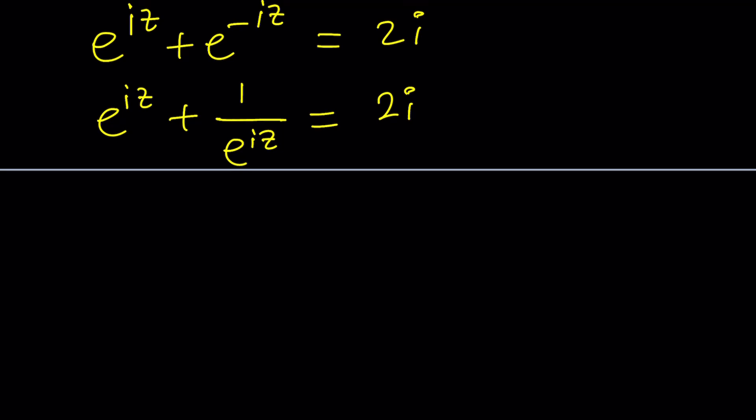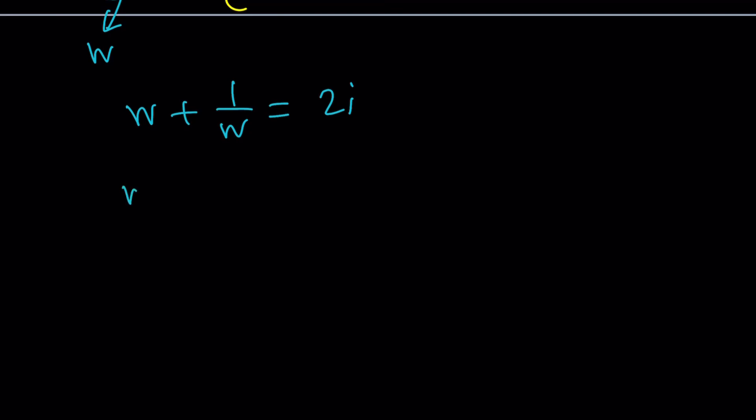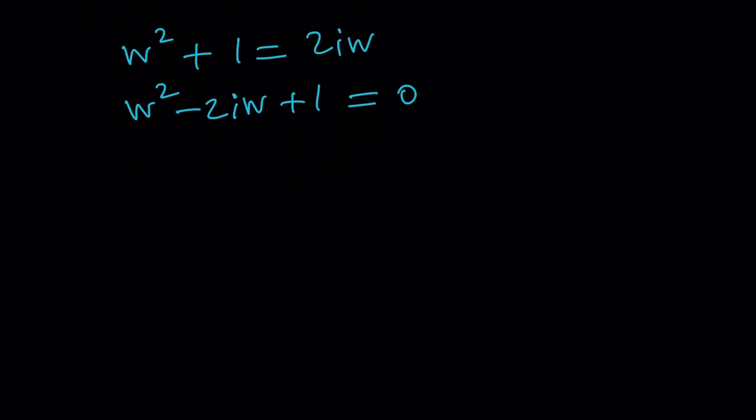Unless you're super good at guessing. Well, let's go ahead and see how we can solve it. I'm going to call this w because it's just another complex number, right? And then this gives us w plus 1 over w equals 2i. And then multiply everything by w. W squared plus 1 equals 2i w. Put everything on the same side, making this a complete quadratic.